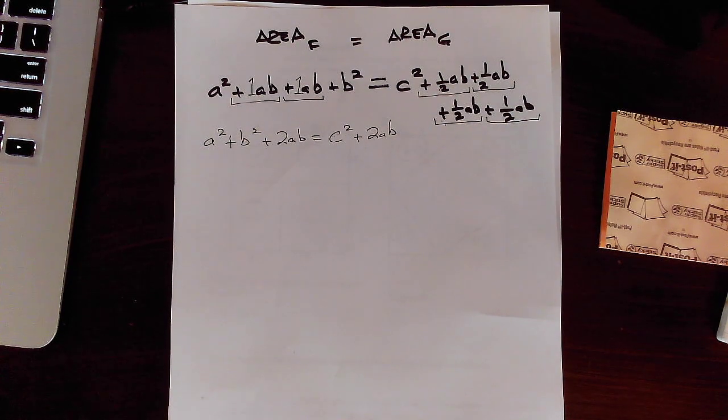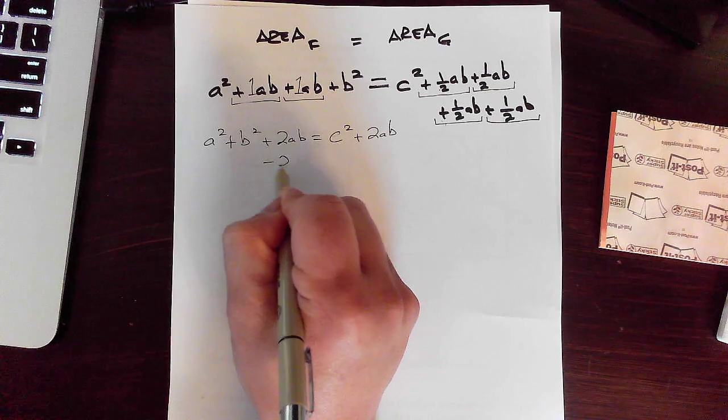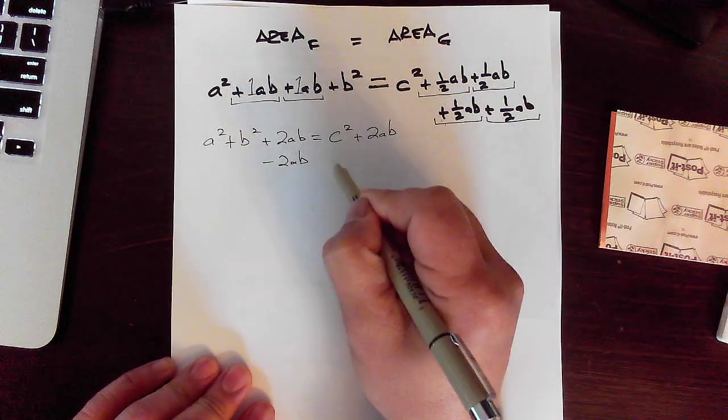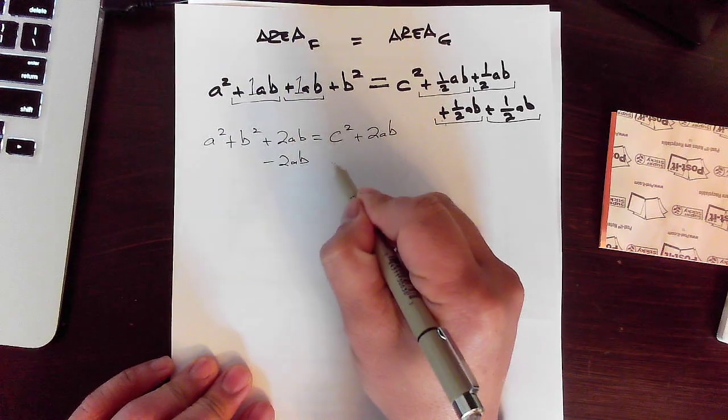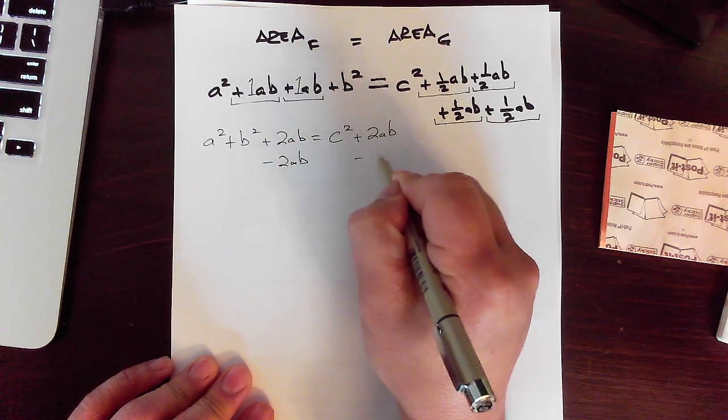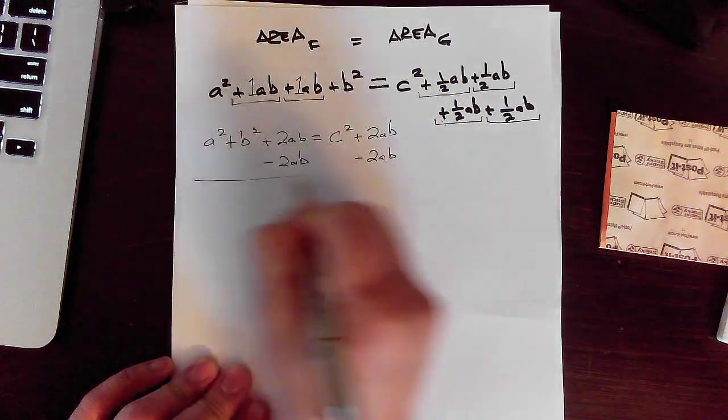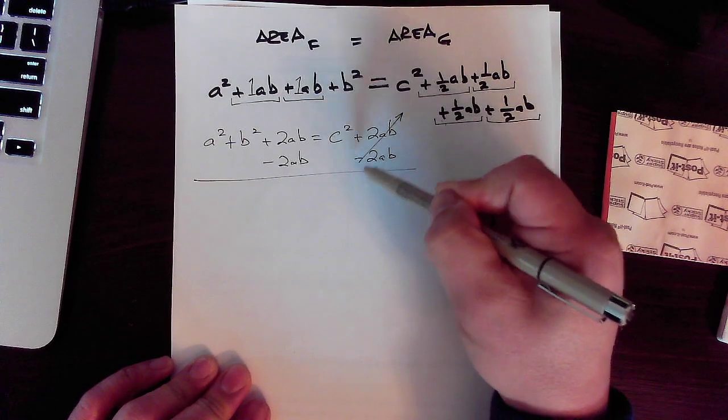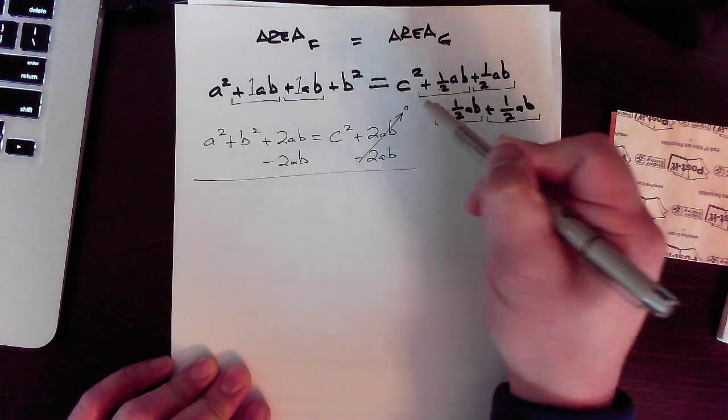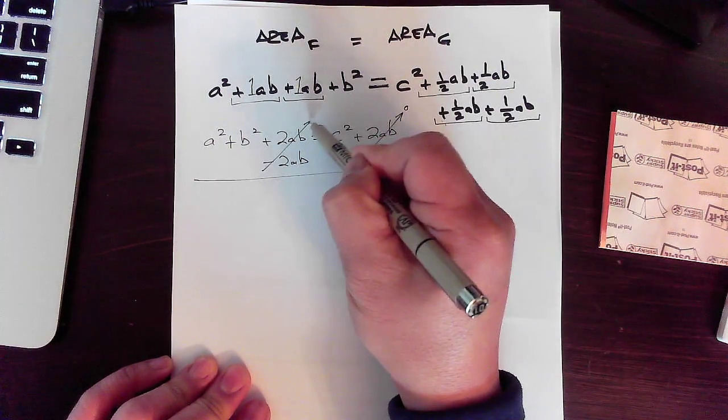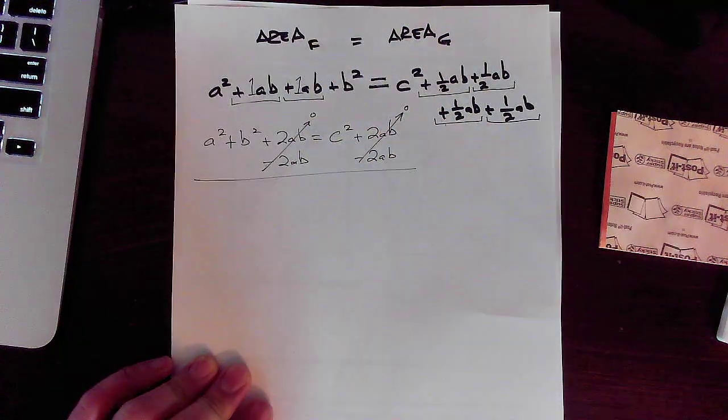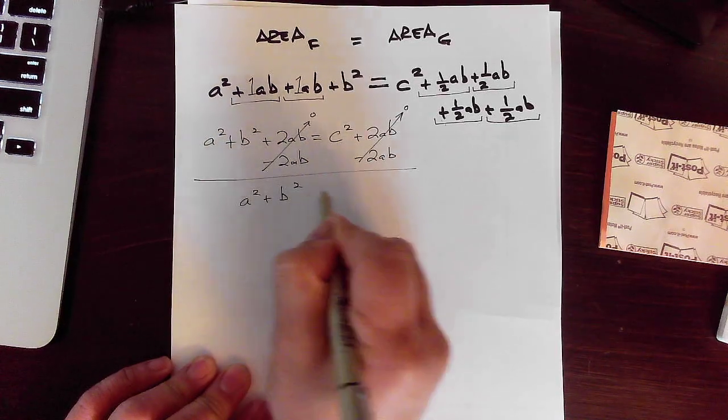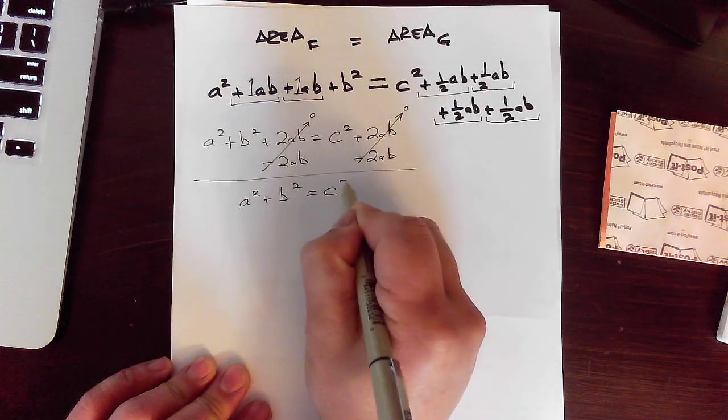I thought this was going to be harder. I'm just going to subtract 2AB from this side of the equation. And if I do it on the left side of the equals, I got to do it on the right side of the equals. Minus 2AB here. That's gone. I like to do a little arrow that says that's equal to zero. And I am left with A squared plus B squared equals C squared.